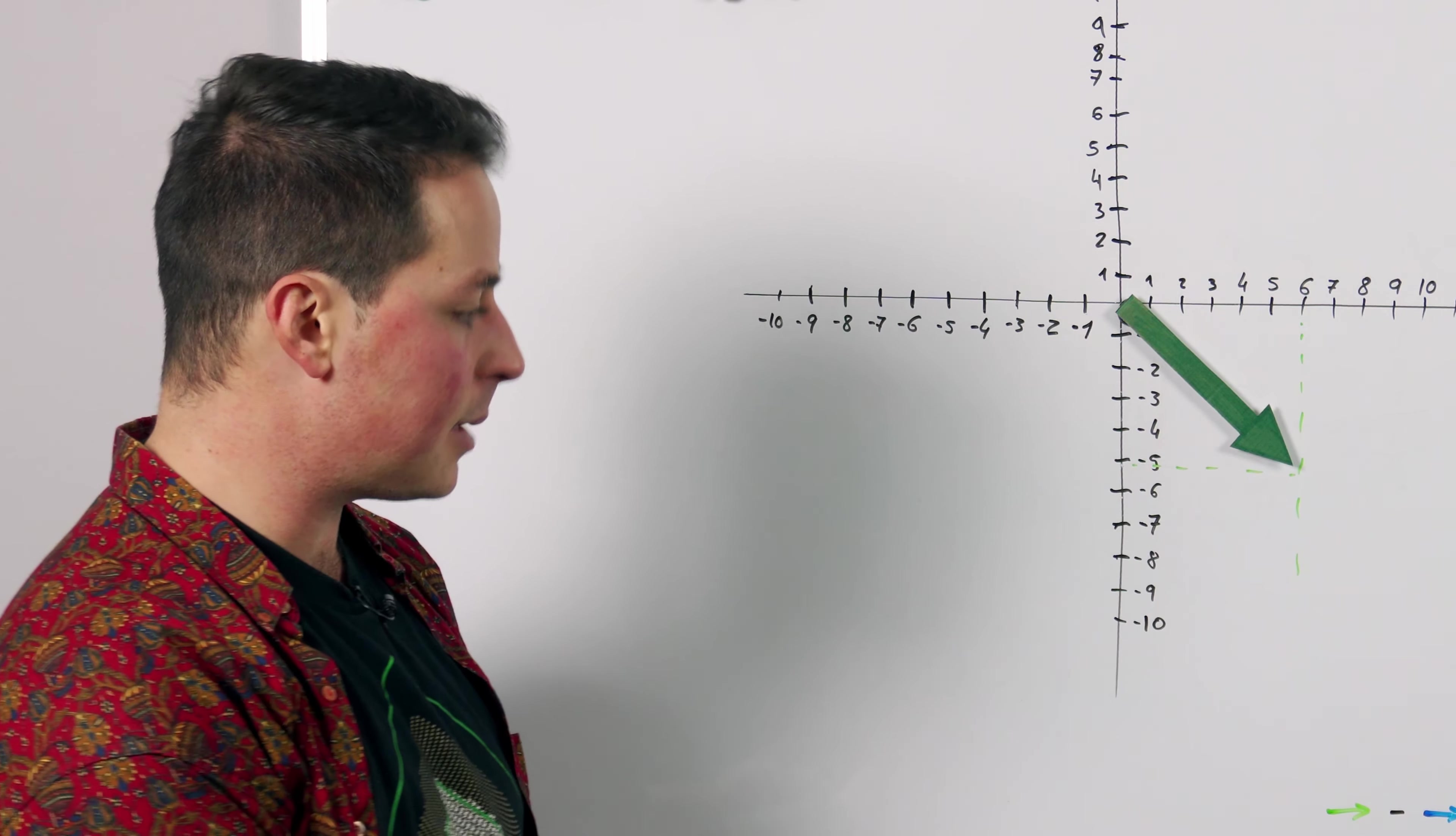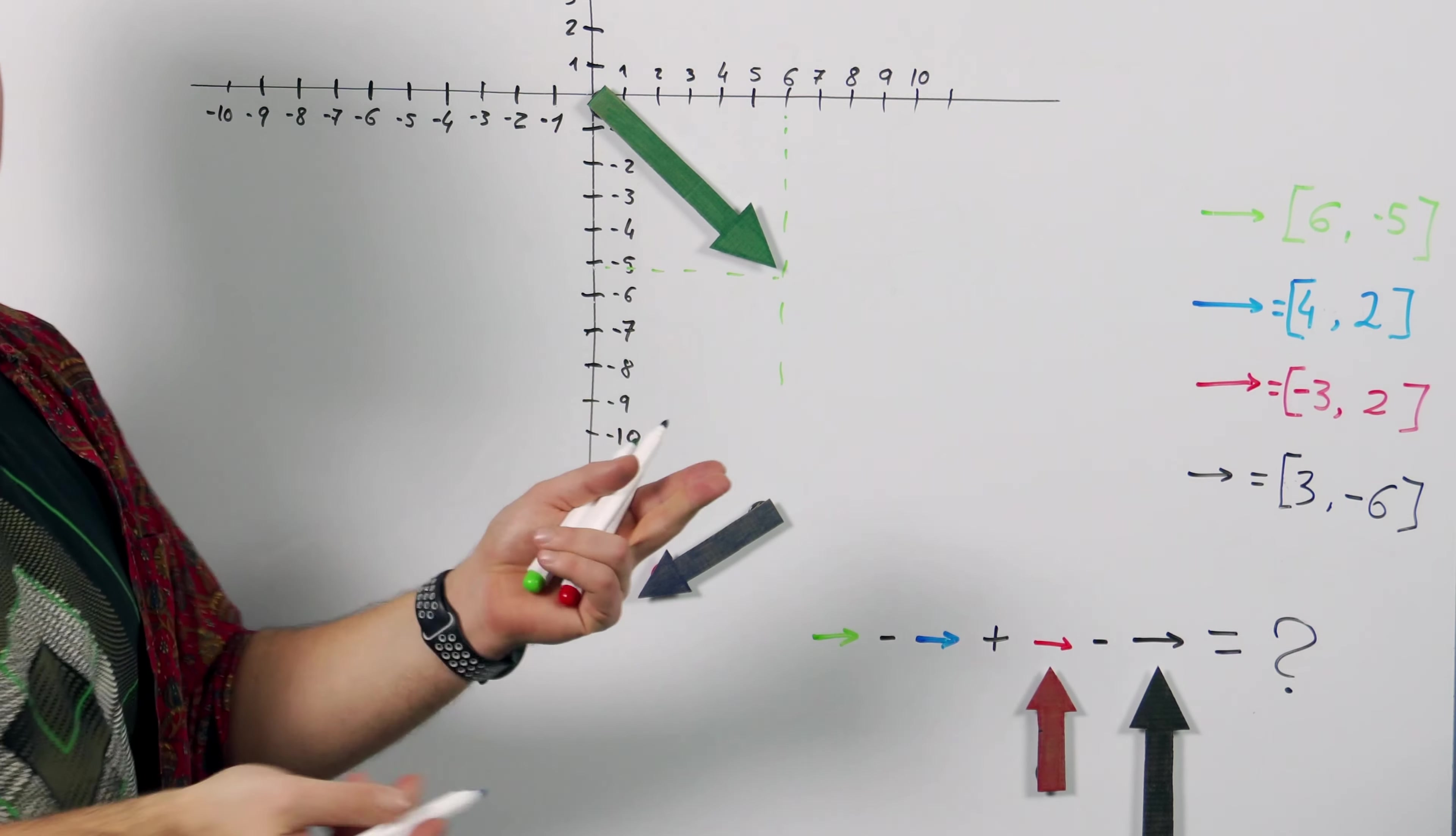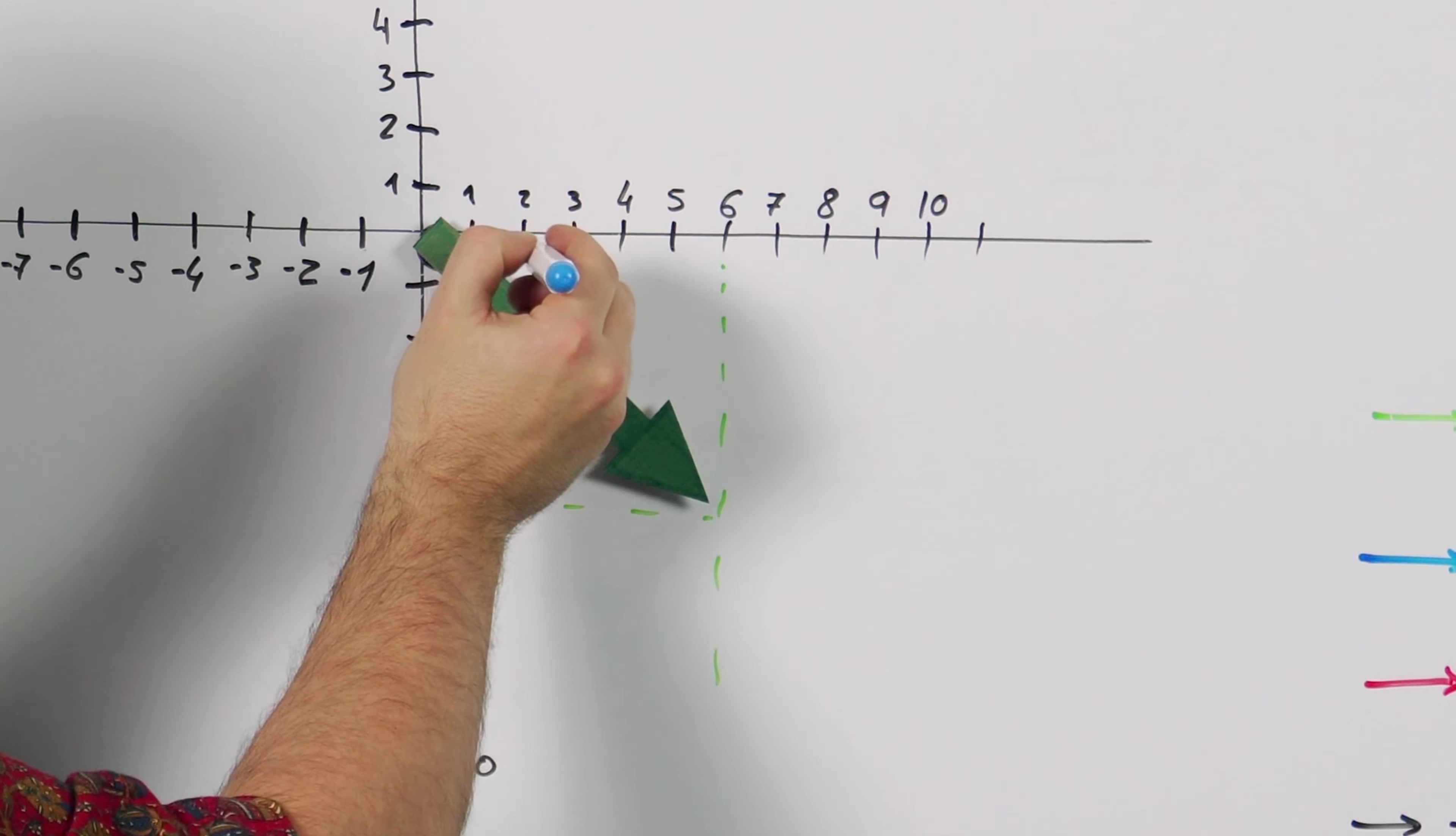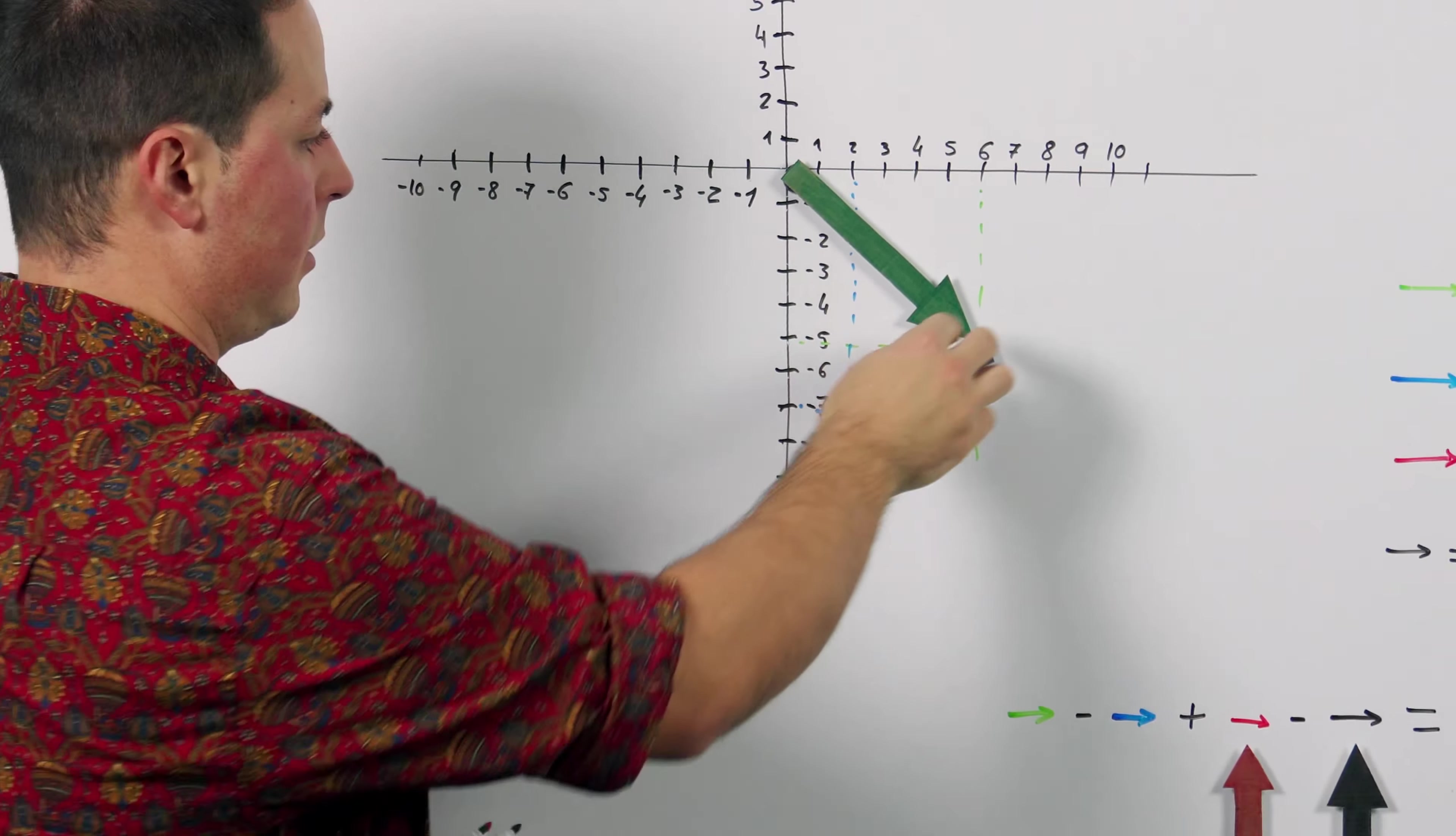Next one up is the blue one. So our blue vector is 4 2 which would look something like this but it has a minus in front of it so we need to flip it looking something like that. To do this mathematically we just add a minus in front of both components and we put it after the green one. So 6 minus 4 is 2 and minus 5 minus 2 is minus 7. So the blue vector should arrive somewhere about here.